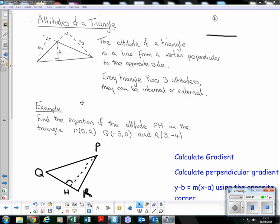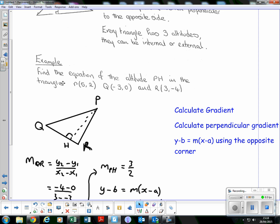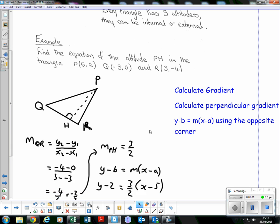An altitude can either be inside or outside of the triangle. Let's look at a question: find the equation of the altitude PH in the triangle PQR, where the coordinates of P, Q, and R are given.